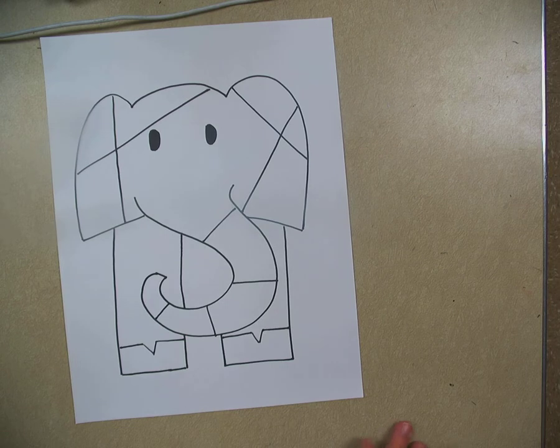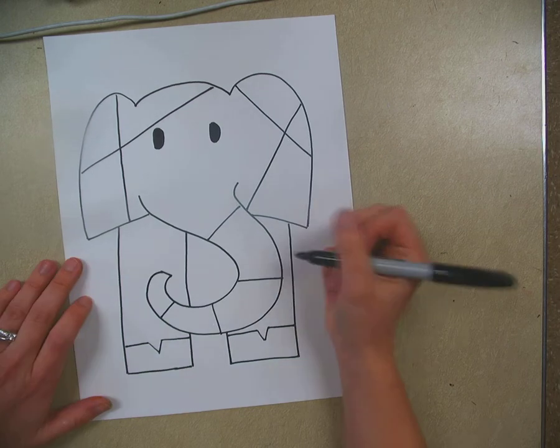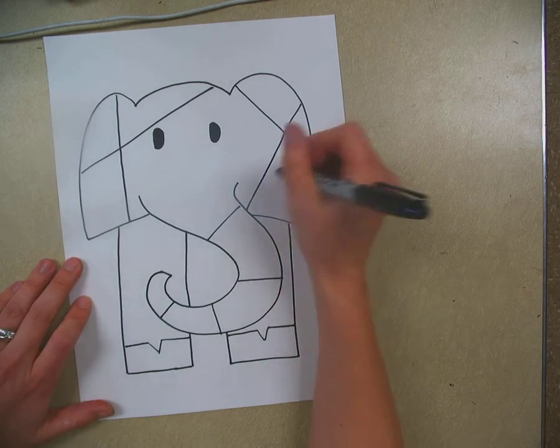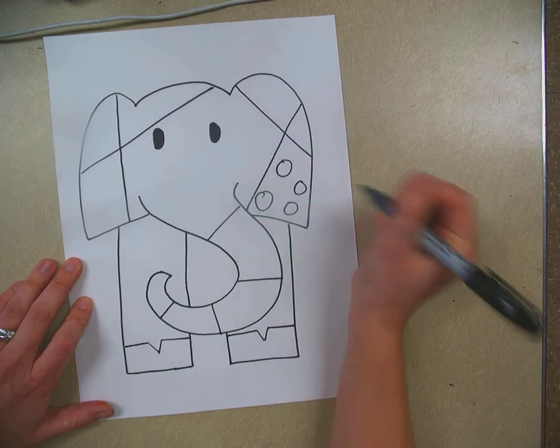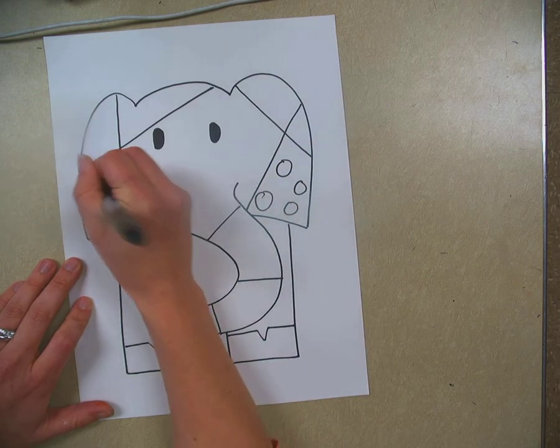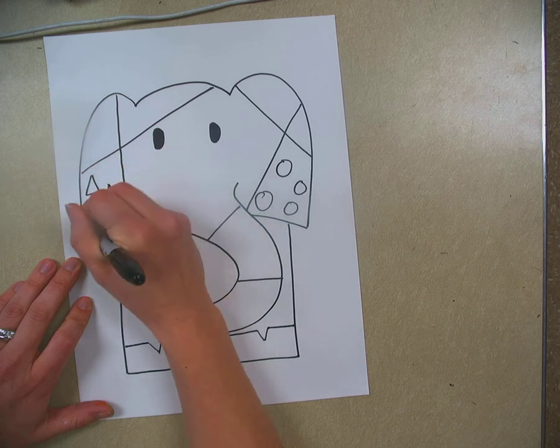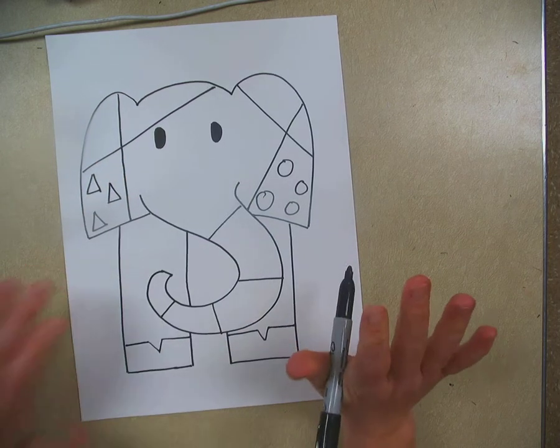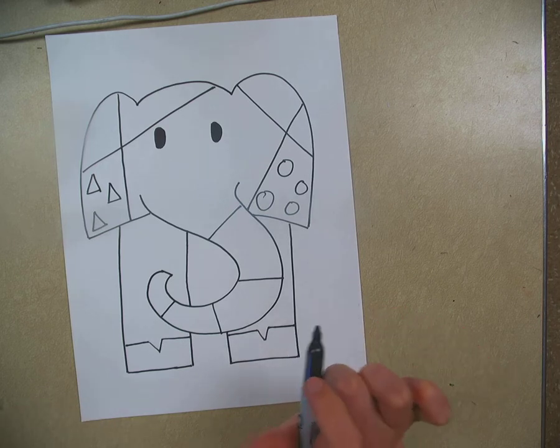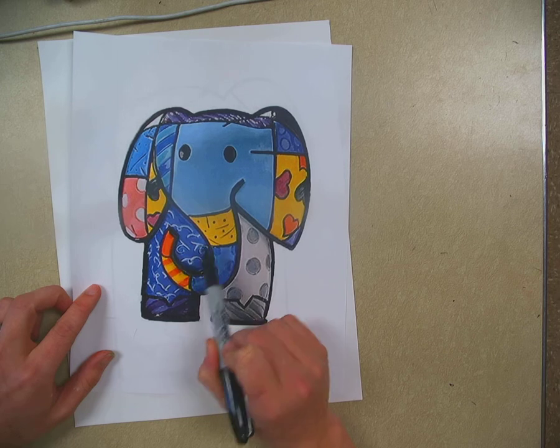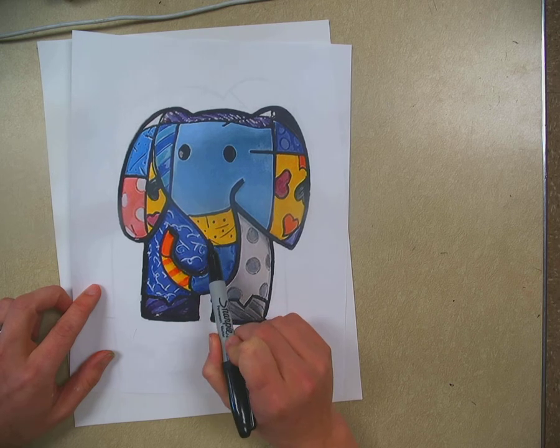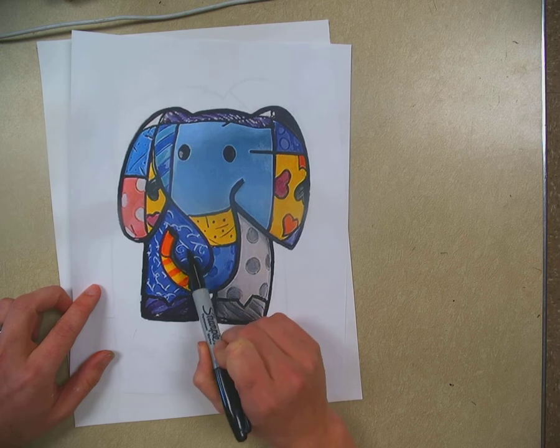Now inside the different sections we can do different patterns. Maybe I'm going to do circles over here. Maybe in this section I'm going to do some triangles. Some of them you can leave just blank and you can just straight up color them. That's totally fine too. Something that Romero Britto is known for is his really cool patterns that he does with just simple shapes like dots and lines.